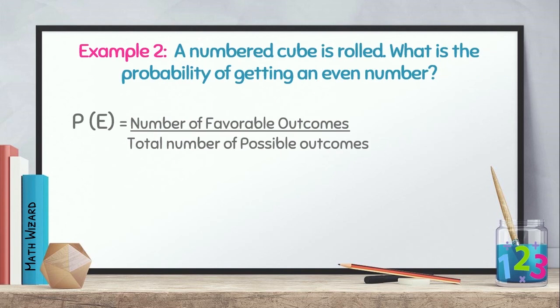Let's now move on to example number 2. A numbered cube is rolled. What is the probability of getting an even number? First, we write the formula. Number of favorable outcomes over the total number of possible outcomes. Next is, we understand the problem.